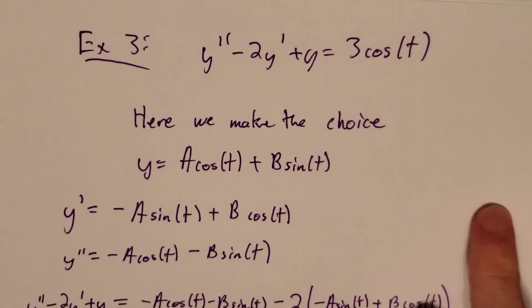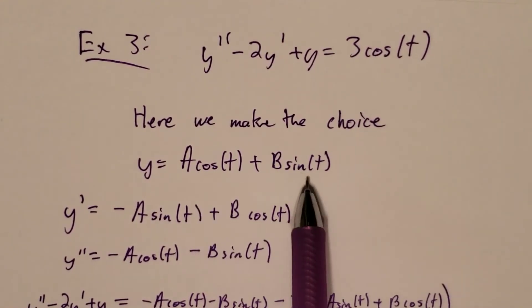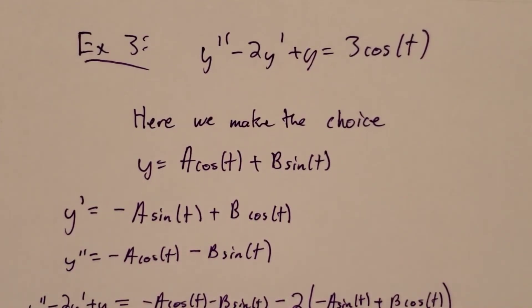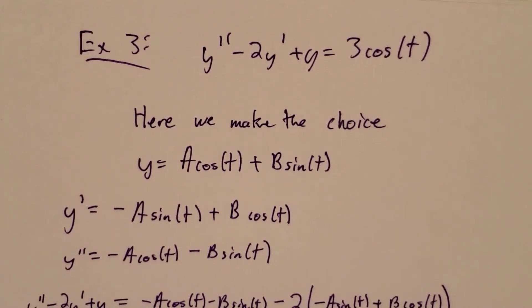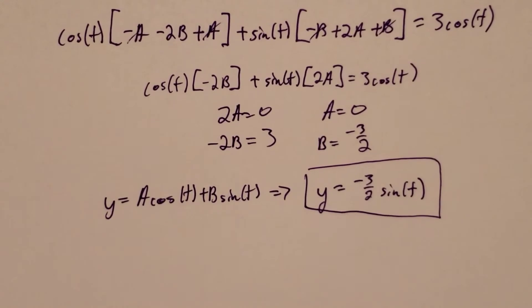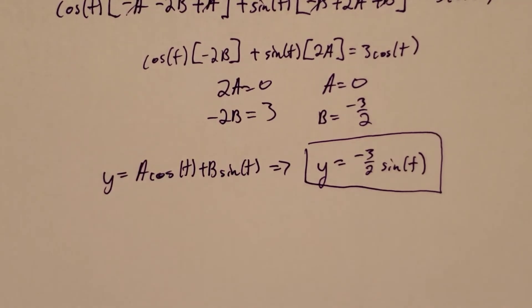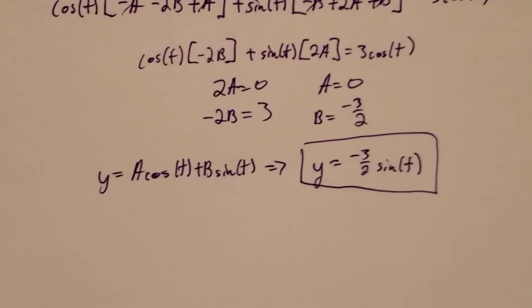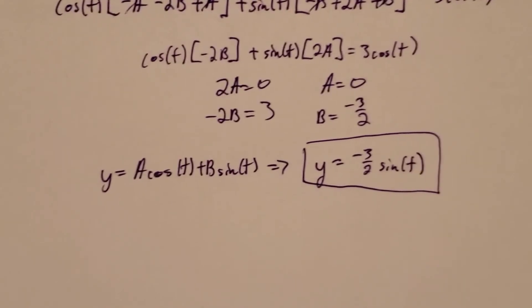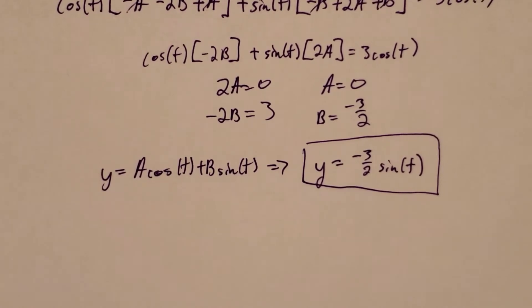So anytime we see a cosine on the right-hand side, we need to include both cosine and sine in our guess. The same applies if we see a sine — we include both. There are many types of problems where we can use the method of undetermined coefficients, and there are a lot of examples in this section. I've covered three, but I really suggest you read through this section and look at all the examples in the book as well, because there are many more types you'll need for the homework. They all stem from this same idea.